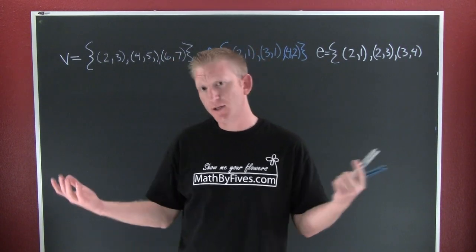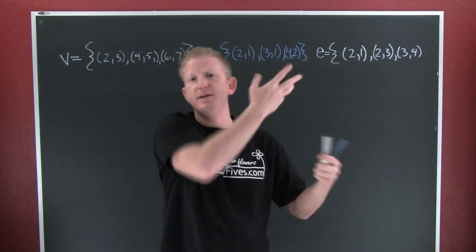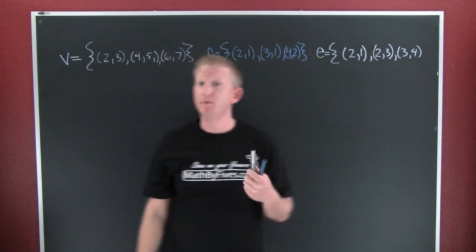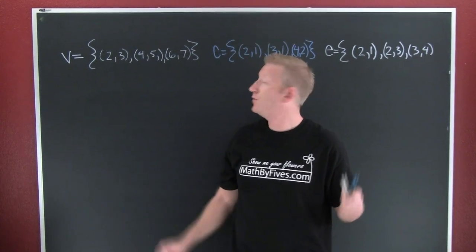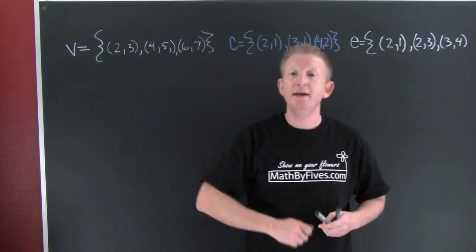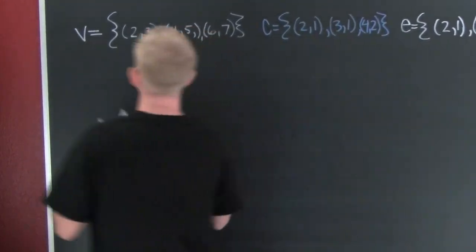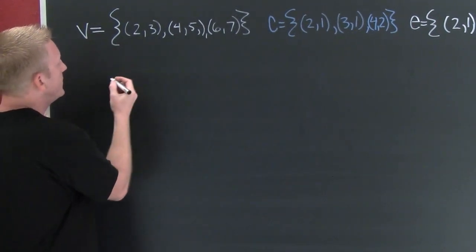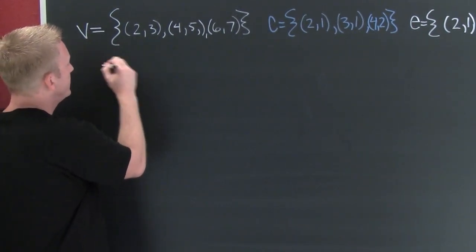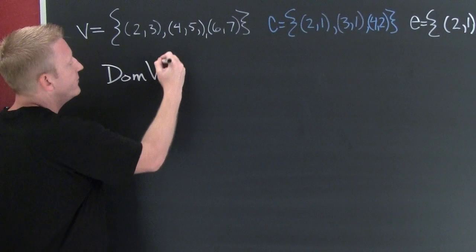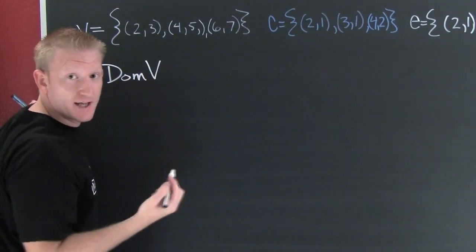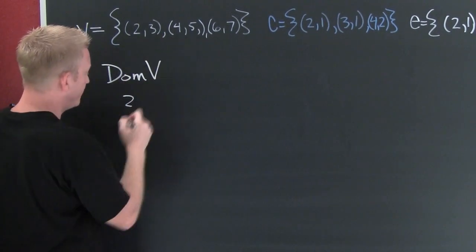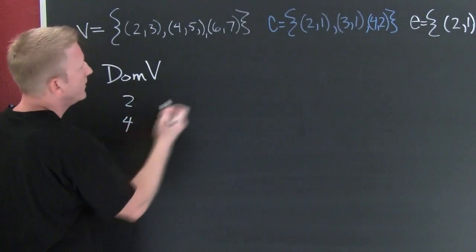Now that we know what a relation is, let's go through three relationships I've set aside — I want to talk about the ins and outs of them and list their domains and ranges. For this first relation V, the domain is the set of all of its first elements: two, four, and six.